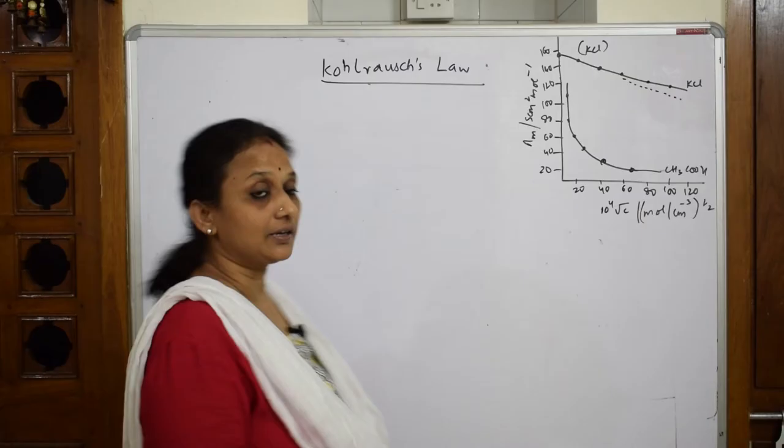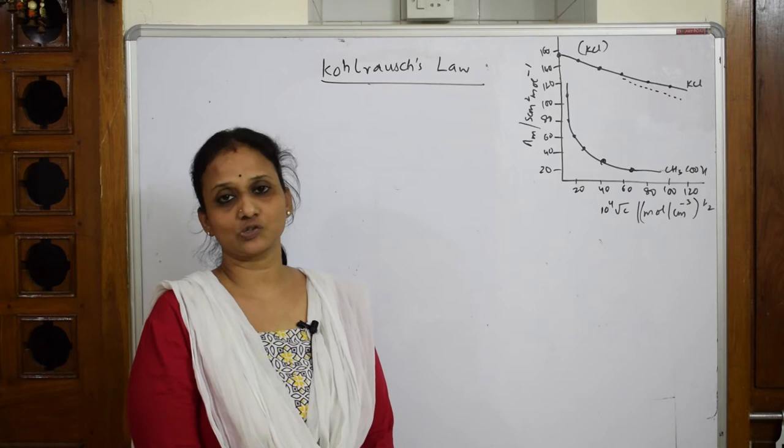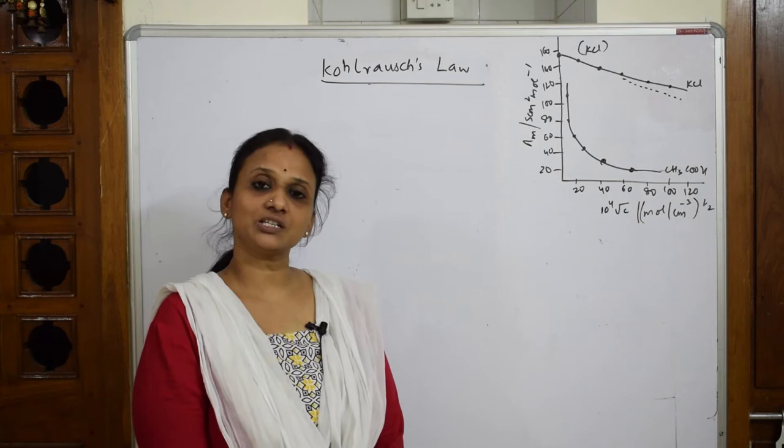Let's come back and start with the next concept, that is Kohlrausch's Law, also named the Kohlrausch Law of Independent Migration of Ions. Before starting into the concept, let us first understand the graph.